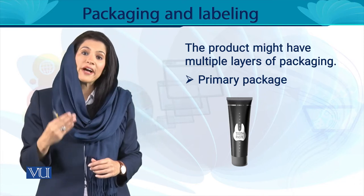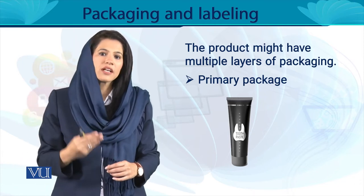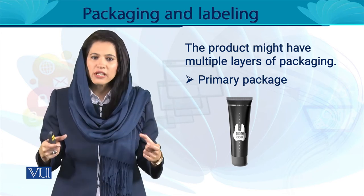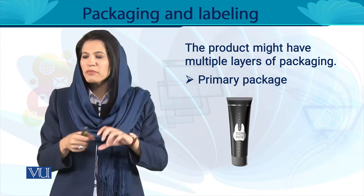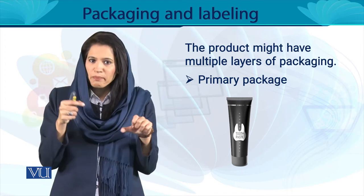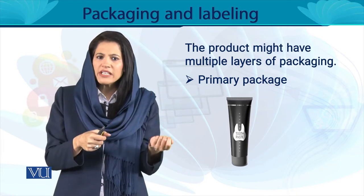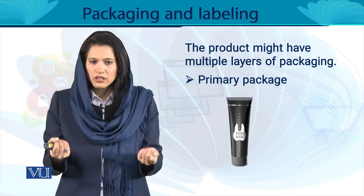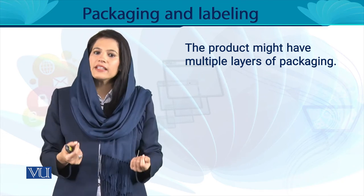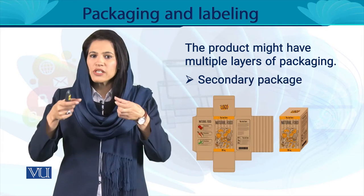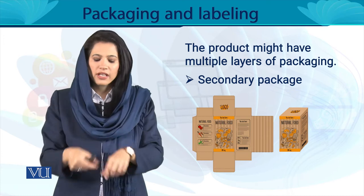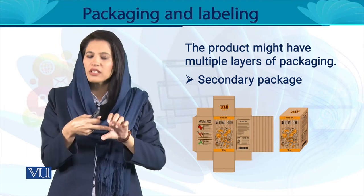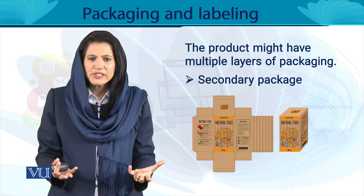किसी भी product के multiple levels of packaging हो सकते हैं। जिस तरह हमने toothpaste की example ली - एक उसकी primary packaging होगी, जैसे toothpaste एक tube के अंदर pack है। फिर second आती है उसकी secondary packaging - आप toothpaste को open नहीं रख सकते, तो आप उसके इर्दगिर्द गत्ते का डिब्बा बनाते हैं, वो tube उसके अंदर pack होती है।